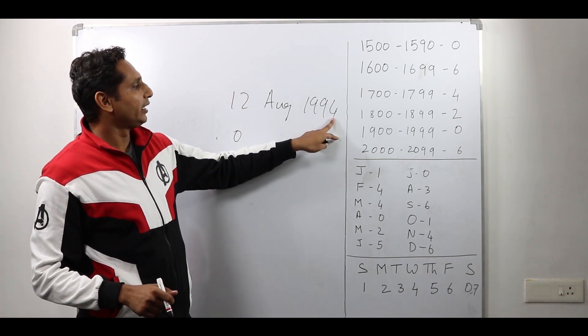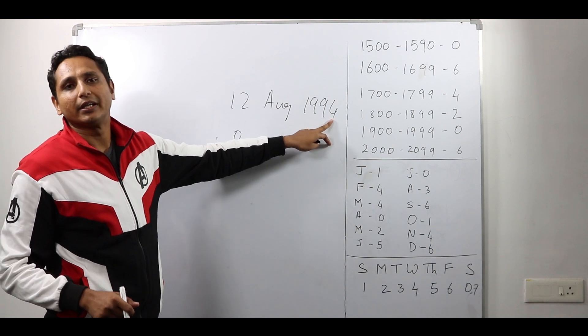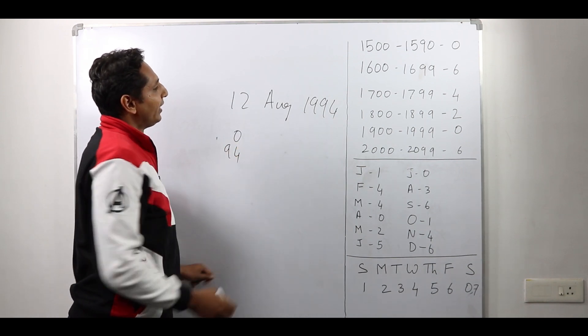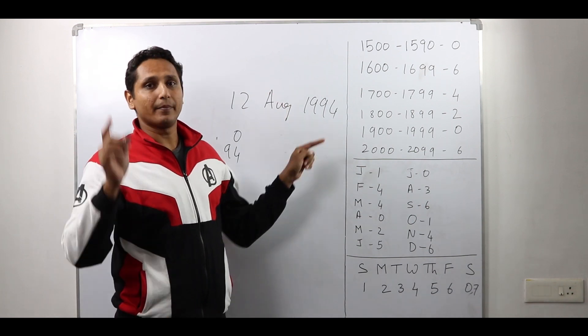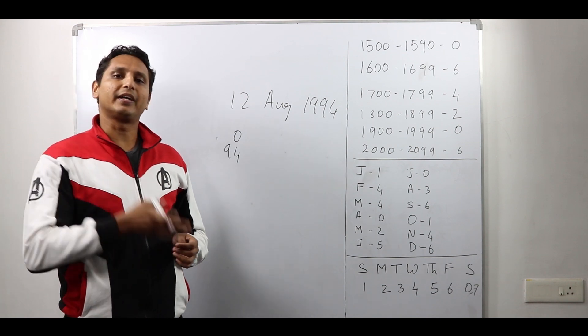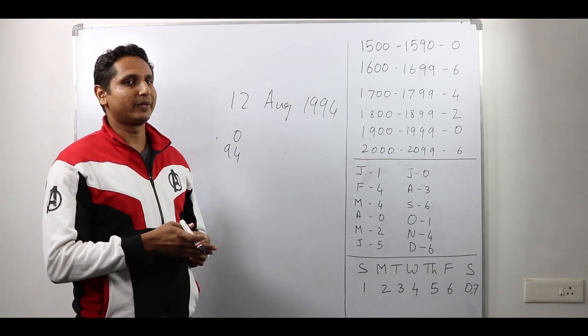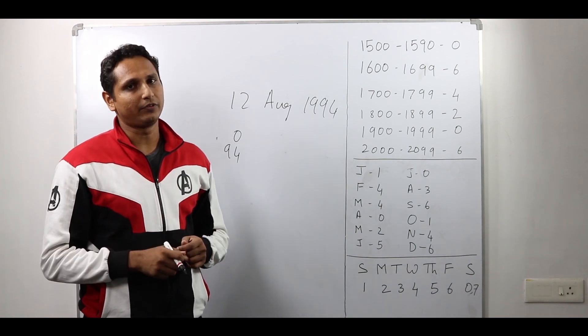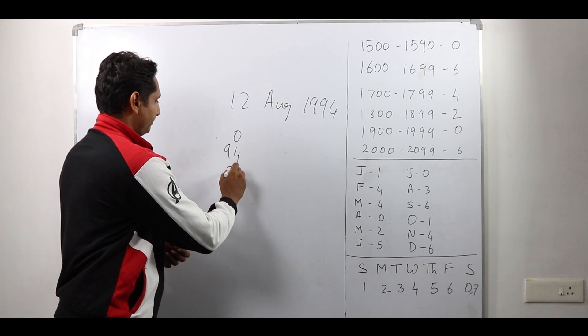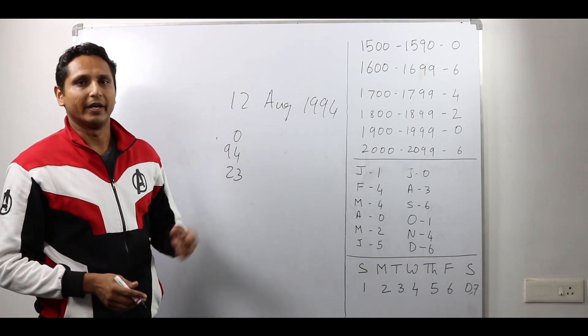Next I look at the last two digits of the year which is 94. I write 94 here. Next, I am required to find the number of leap years in 94. How do I find that? Divide it by 4, take the quotient that will be the number of leap years. So the quotient when I divide 94 by 4 is 23.